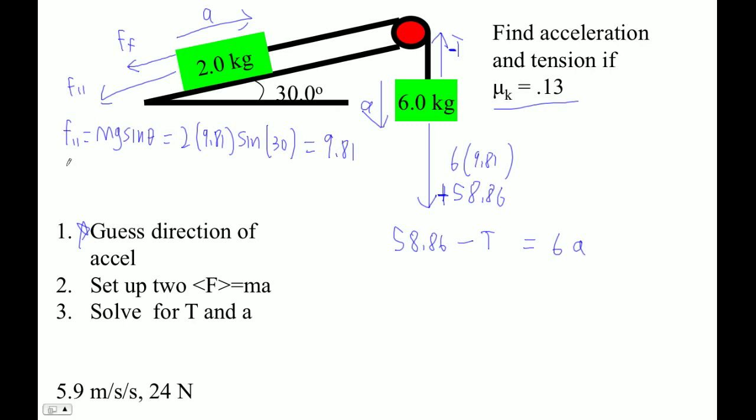And then the force of friction is going to be mu times the normal force, which is mu times mg cos theta. Because mg cos theta will become the perpendicular force. And so that equals 0.13 times 2 times 9.81 times cos 30.